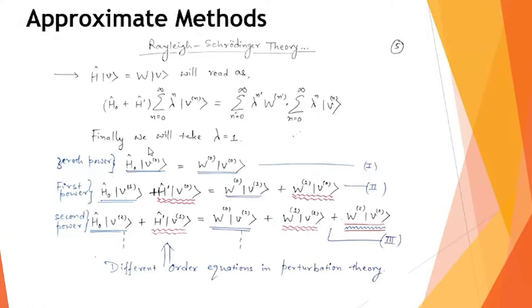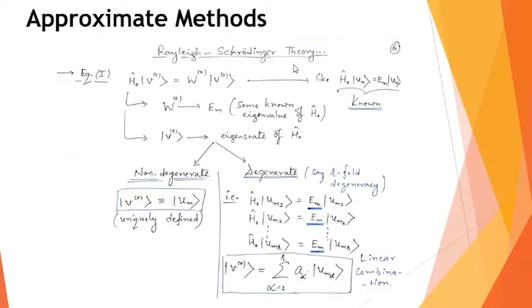Solving the modified energy eigenvalue equation Hψ = Wψ using power series expansion, we collect equations for different powers of λ: the zeroth-order term, the first-order term, the second-order term, and so on. These three equations form the perturbation series.